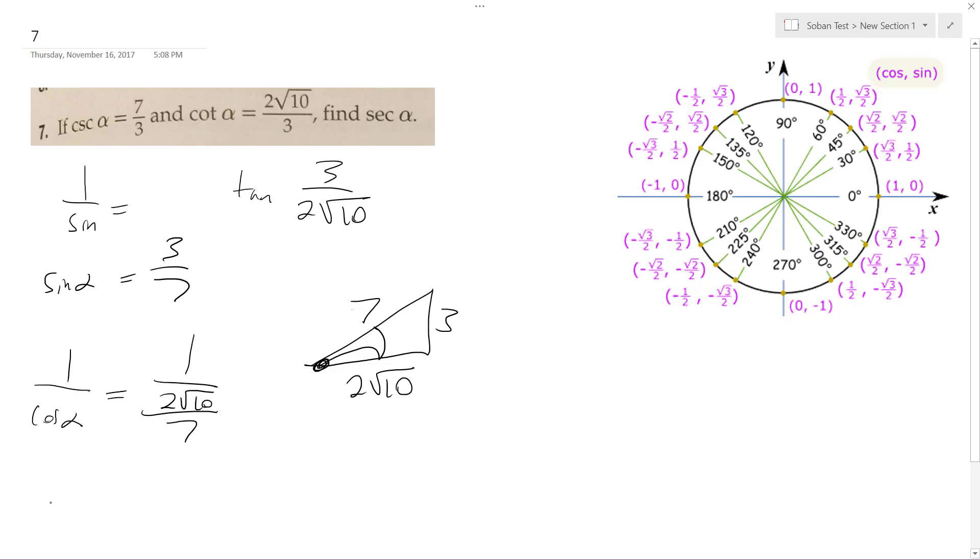So secant alpha is going to be equal to 7 over 2 root 10. Rationalize the denominator. Root 10 over root 10. And then we end up with 7 root 10 over 2 times root 10, multiply together is 10, 2 times that's just 20. So we end up with the secant of alpha is equal to 7 root 10 over 20.